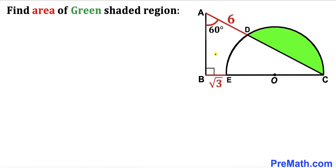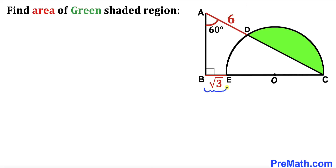Welcome to PreMath. In this video we have a right triangle ABC and a semi-circle with center O put together, as you can see in this diagram. As a result we get this green shaded region. Segment AD is 6 units, segment BE is the square root of 3 units, and angle BAC is 60 degrees. Our task is to calculate the area of this green shaded region.